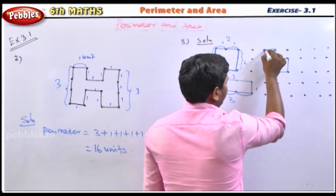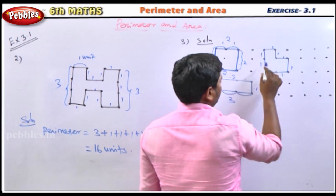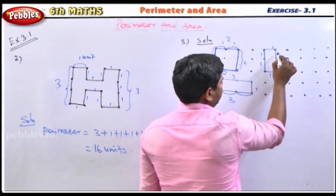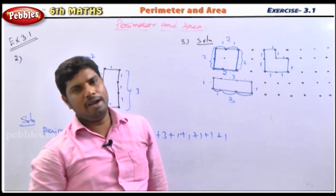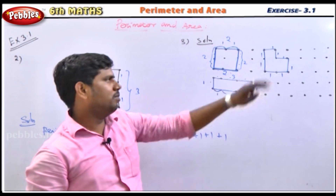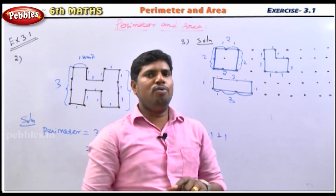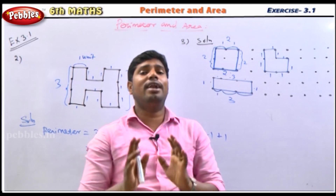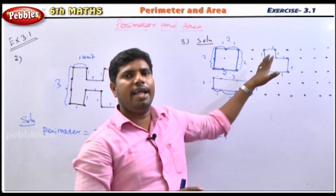Another shape looks like an L. Counting its sides: 1 plus 1 plus 1 plus 1 plus 1 plus 1 plus 1 plus 1 equals 8. So this L-shaped figure also has a perimeter of 8 units. You can draw any other shape by yourself — as long as the total perimeter equals 8 units.